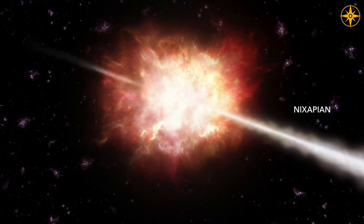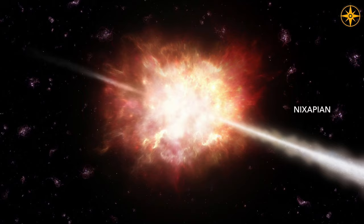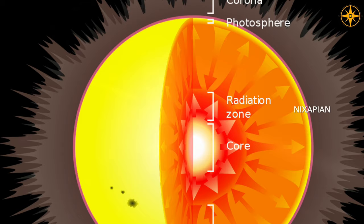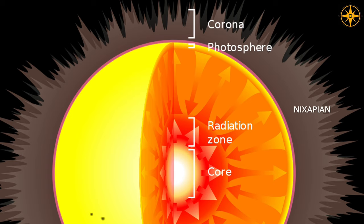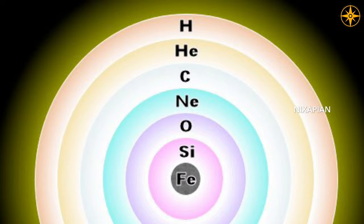Hydrogen fuses into helium and it gives out an enormous amount of energy. Energy in the form of radiation pushes against gravity, so there is a balance between radiation and gravity. In stars heavier than the sun, the heat and pressure at the core allows heavier elements to fuse until they reach iron.